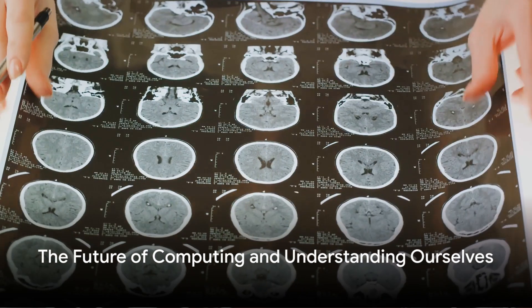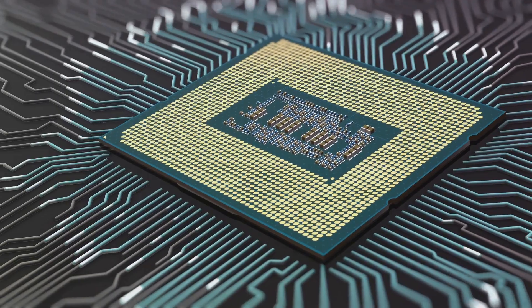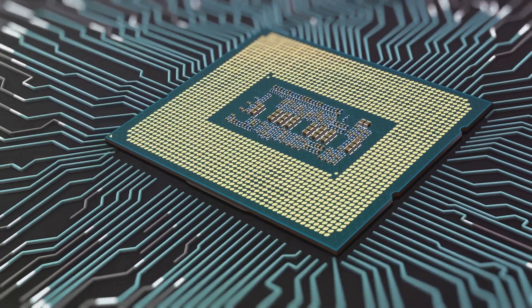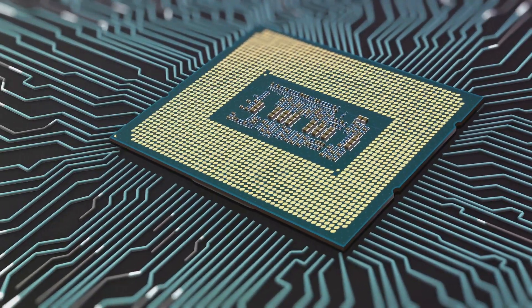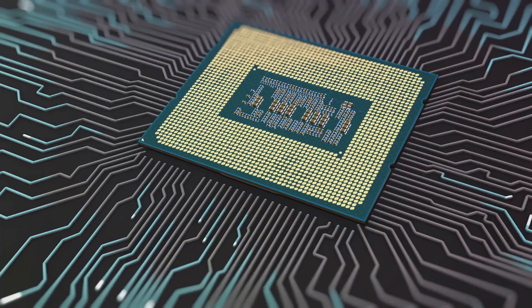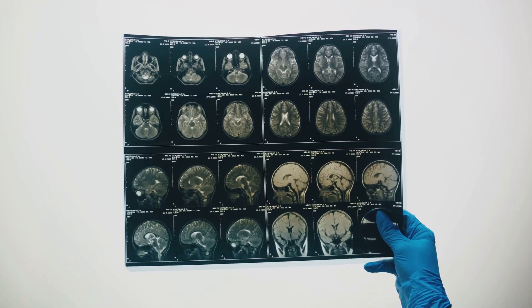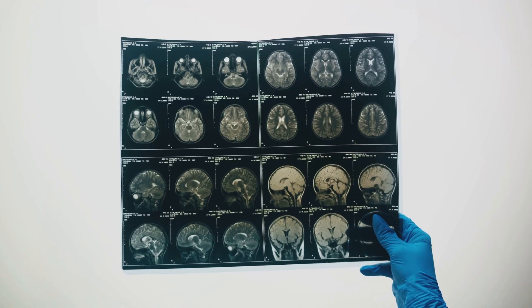In conclusion, neuromorphic computing is a fascinating and dynamic field. It's about more than just building faster computers, it's about fundamentally changing how those computers operate. By mimicking the human brain, neuromorphic computing is pushing the boundaries of artificial intelligence, paving the way for machines that learn and adapt just like us. This isn't just the future of computing, it's the future of understanding ourselves.